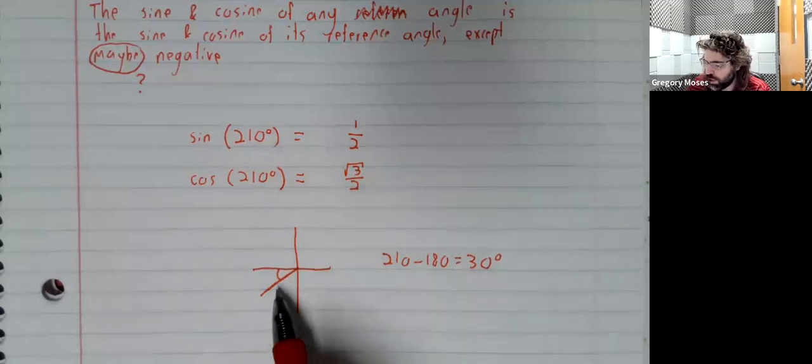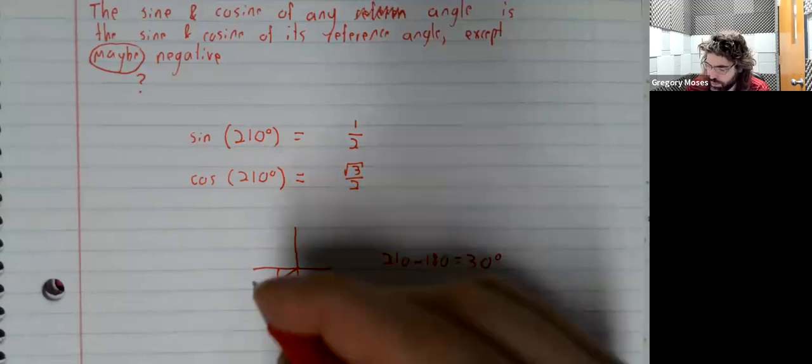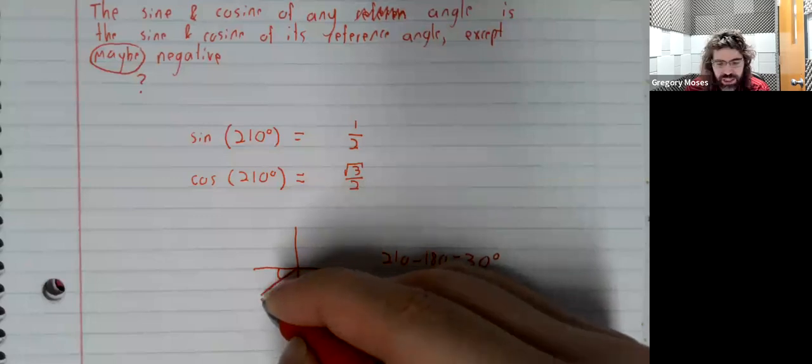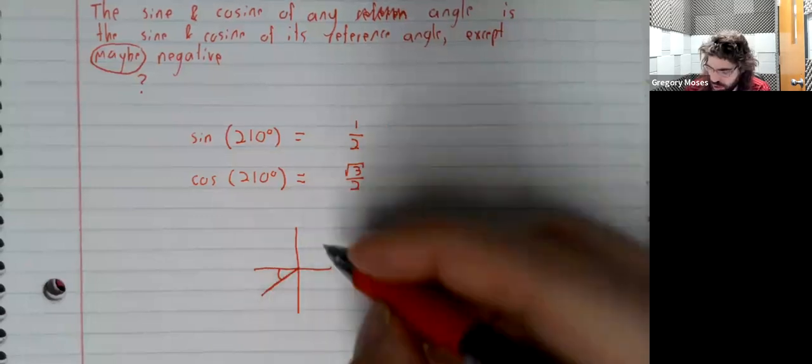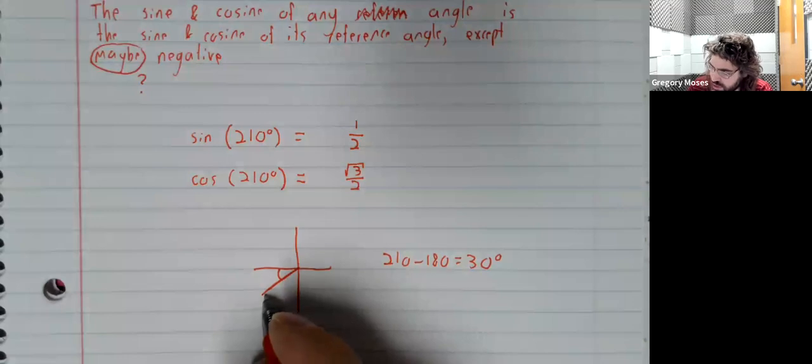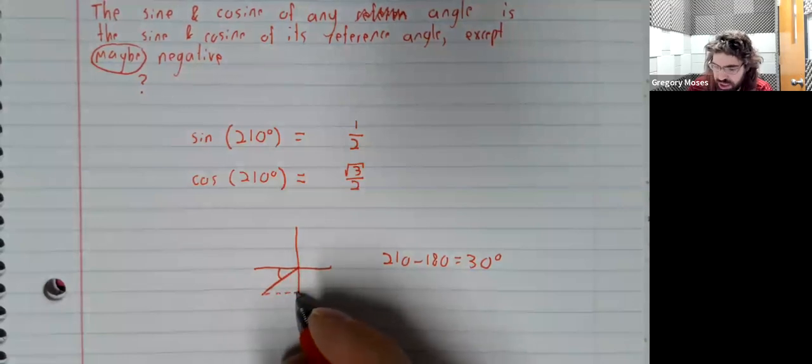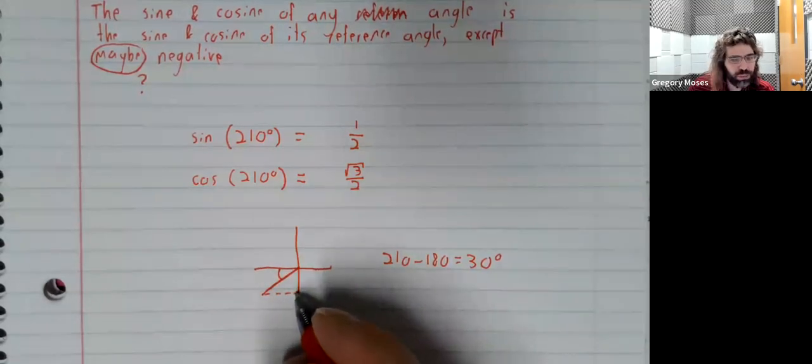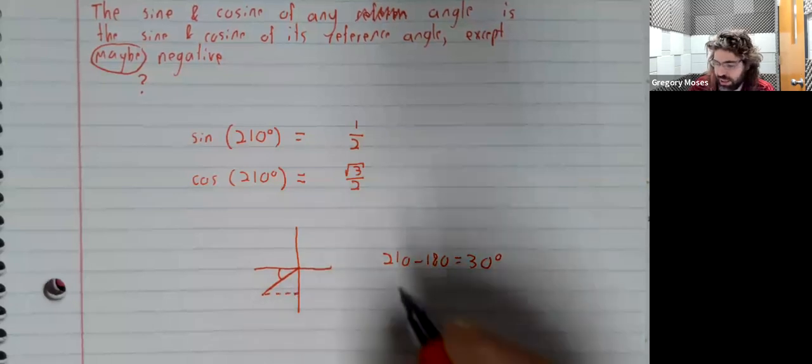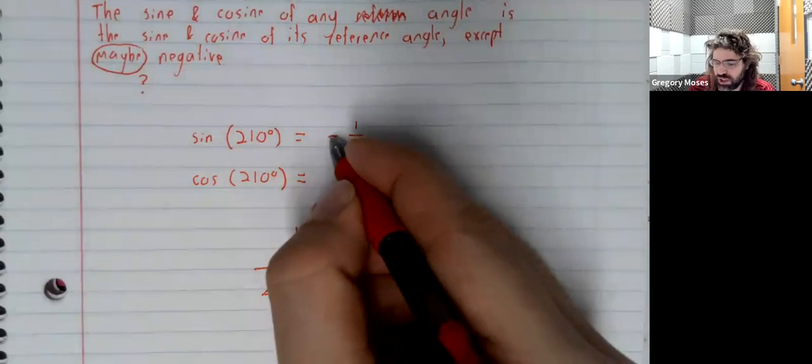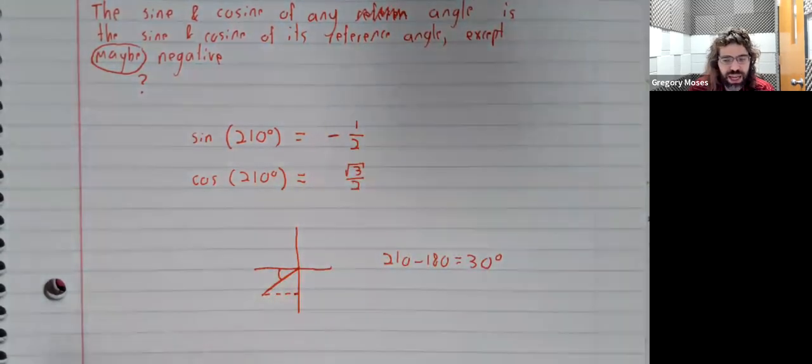We'll say, well, this angle is in the third quadrant. So the sine is the x coordinate. Sorry, no, the sine is the y coordinate. And the y coordinate's down here. The y coordinate should be negative. So the sine needs to be negative.